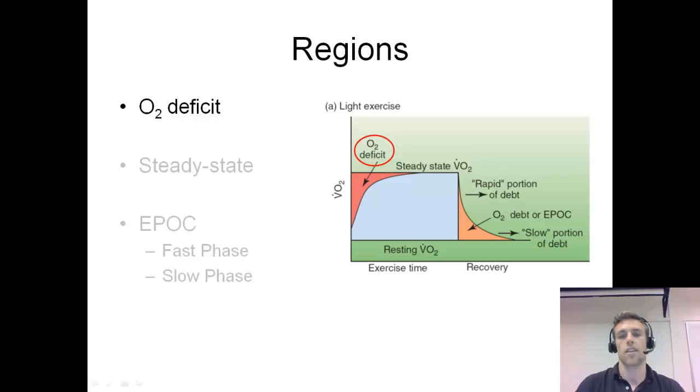If our ADP stimulates oxidative phosphorylation and our trained athlete is sensitive to that change, then they will hit their aerobic or they'll hit steady state sooner. Their aerobic systems will start working sooner, and they're going to reach steady state sooner. A trained athlete will have a smaller O2 deficit.